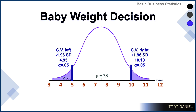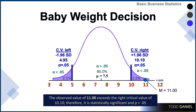The upper critical value corresponds to a mean of 10.10, based on an alpha level of .05, putting 2.5% of scores in the upper tail. Combined with the 2.5% in the lower tail, these collectively add up to 5% of scores. Therefore, the tails represent probabilities less than .05, and the body of the curve represents probabilities greater than .05, including 95% of scores. We then place our sample mean of 11 from the Siberian sample on the number line and find that it has exceeded the upper critical value — it is over the fence. The observed value of 11 exceeds the right critical value of 10.1.